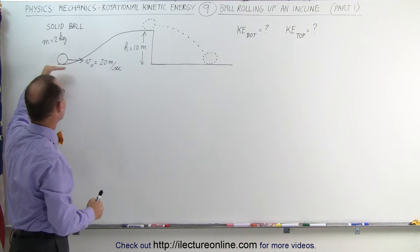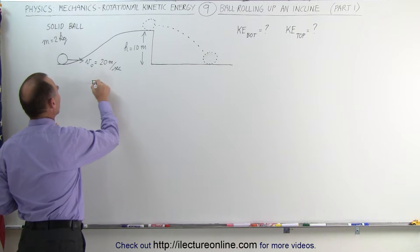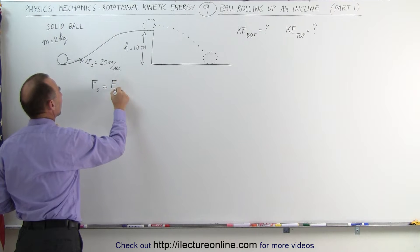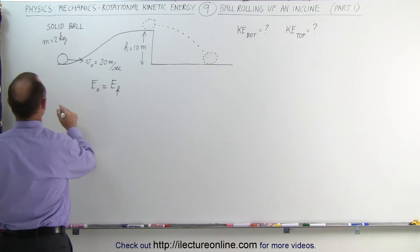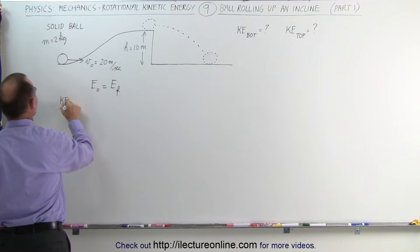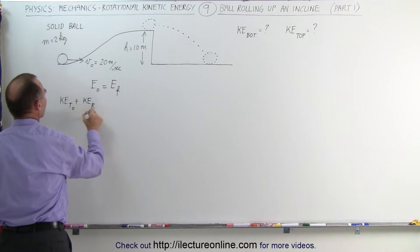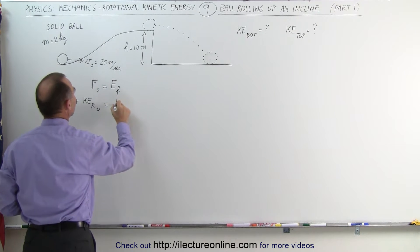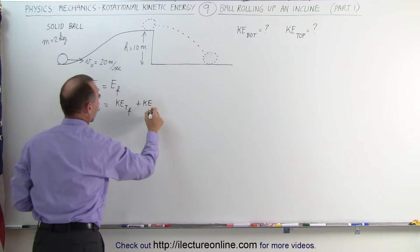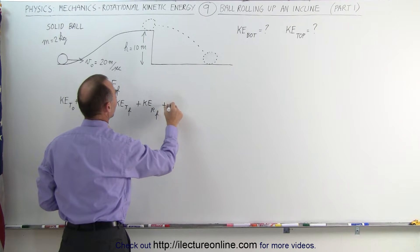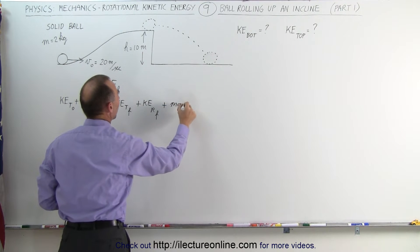Starting out with part 1, we're going to determine the energy at the bottom of the hill and the energy at the top of the hill. We can say that the energy initial at the bottom equals the energy final at the top. At the bottom it only has kinetic energy — both translational and rotational — so KE translational plus KE rotational initial equals KE translational final plus KE rotational final plus the potential energy MGH.